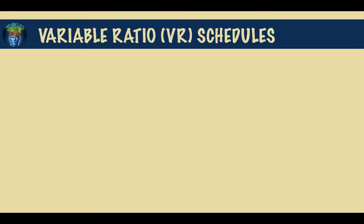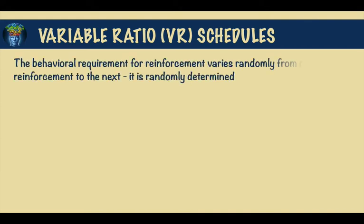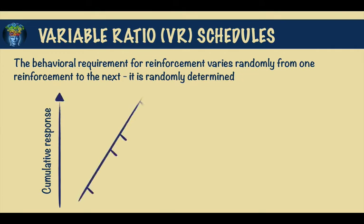Next we have the variable ratio reinforcement schedule. These differ from fixed schedules in that the behavioral requirement for reinforcement varies randomly from one reinforcement to the next. You don't really know when the consequence will occur — all you know is that the reinforcement will occur on average after you have performed the behavior a number of times, and this is randomly determined but set as an average.